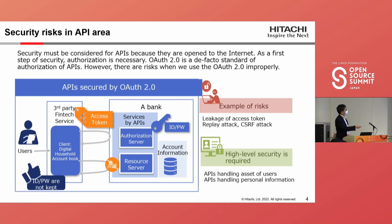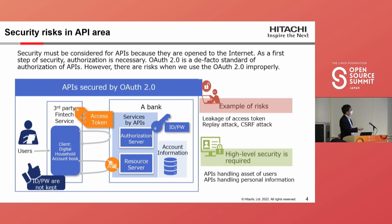Credential information is held in this bank. The user and client application are authenticated. After authentication, the authorization server issues an access token. This access token is a proof that the holder can access the user's resource. The client application then calls the API with this access token. The resource server verifies the access token and returns the user's information to the client application. Unlike web scraping, the user's ID and password are not kept in the client application. This is very convenient and secure, so it is widely used.